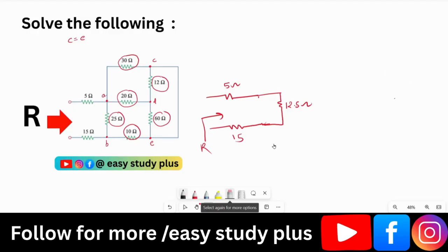Now, R is very simple. R is very simple. Since all of three are in series, so 5 plus 12.5 plus 15. Now, add them. It is 15 plus 5, 20. 20 plus 12.5 is 32.5. That's the correct answer.